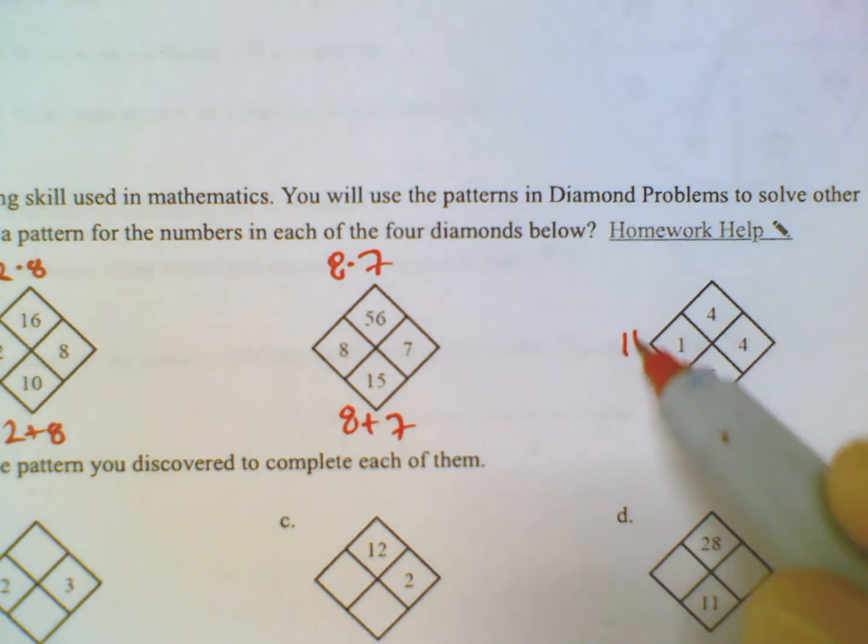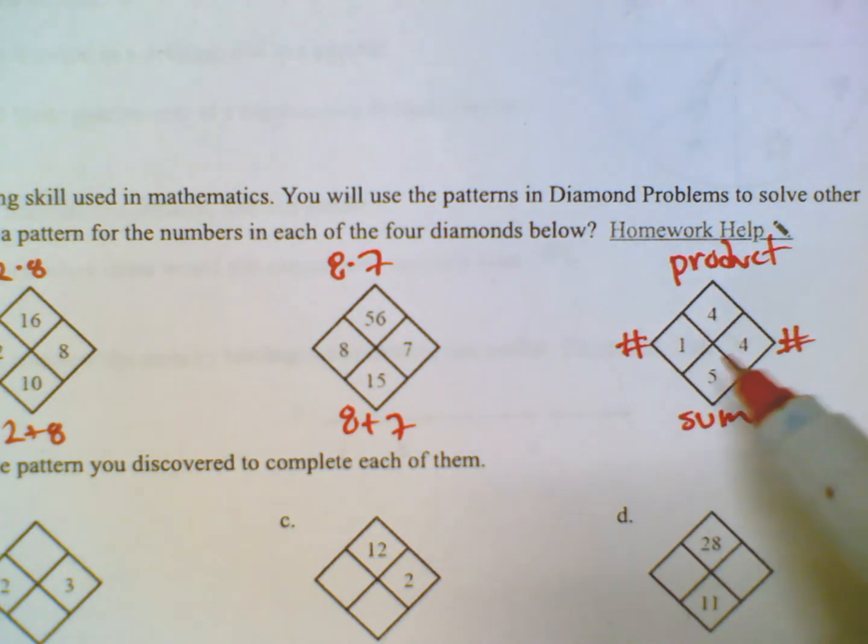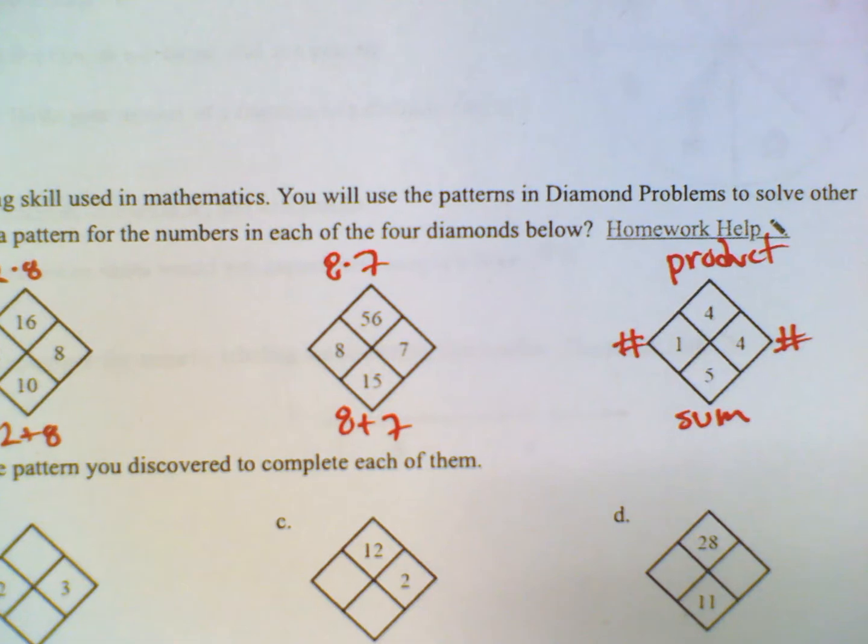So these are the numbers that you either multiply, so we call that a product on top, and then add, and we call that a sum on the bottom. Sure enough, 4 times 1 is 4. And then 1 plus 4 is 5. So there's our pattern.